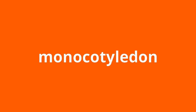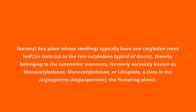Monocotyledon. Botany: any plant whose seedlings typically have one cotyledon (seed leaf), in contrast to the two cotyledons typical of dicots, thereby belonging to the taxonomic monocots, formerly variously known as Monocotyledons, Monocotyledonii, or Liliocida — a class in the angiosperms, the flowering plants.